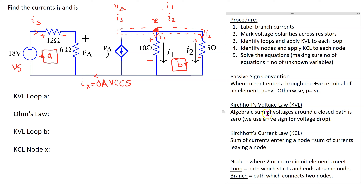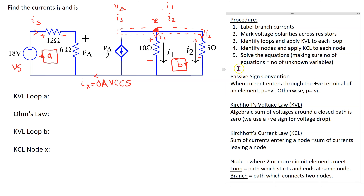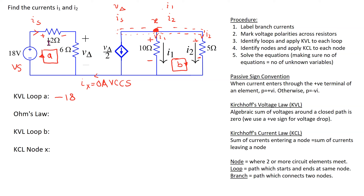The problem is now set up and we are ready to write the circuit equations. Let's apply Kirchhoff's voltage law to loop A. KVL states that the algebraic sum of voltages around a closed path is zero, and we use a positive sign for a voltage drop following passive sign convention. We start at the independent voltage source: going from minus to plus is a voltage rise, written with a minus sign, so the first term is minus 18. Going from plus to minus is a voltage drop, and we use Ohm's law to write the value of the voltage drop.